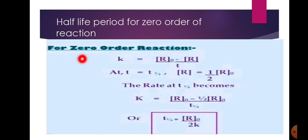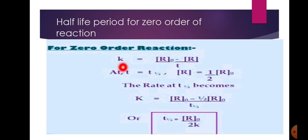Half-life period for zero-order reaction. We have seen zero-order, first-order, and second-order reactions. For zero-order reaction, the half-life period formula is: k is equal to (R₀ minus R) upon t.